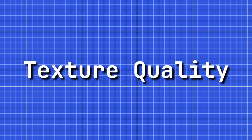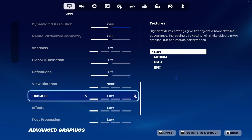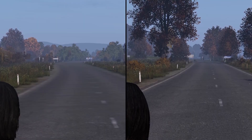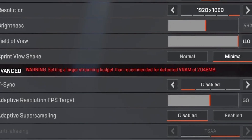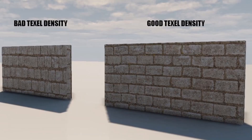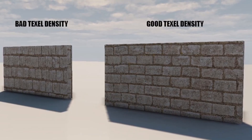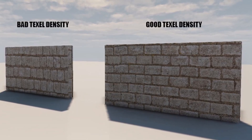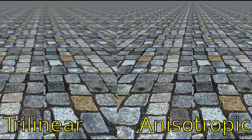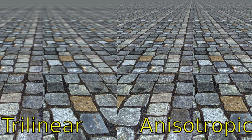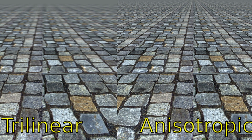Texture quality and anisotropic filtering: higher texture quality and anisotropic filtering enhance texture detail and sharpness, primarily impacting GPU performance by increasing VRAM usage because the texel density of the texture is higher. Anisotropic filtering is a cool way of sampling texels that are very small relative to the view, so it doesn't look glitchy.